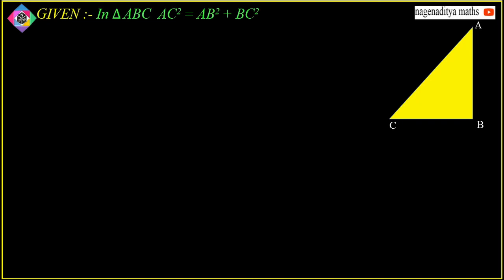What do we have to prove in this theorem? We have to prove that triangle ABC is a right angle triangle. For that, we have to prove angle B is equal to 90 degrees. So we write under the heading RTP: angle B = 90°.